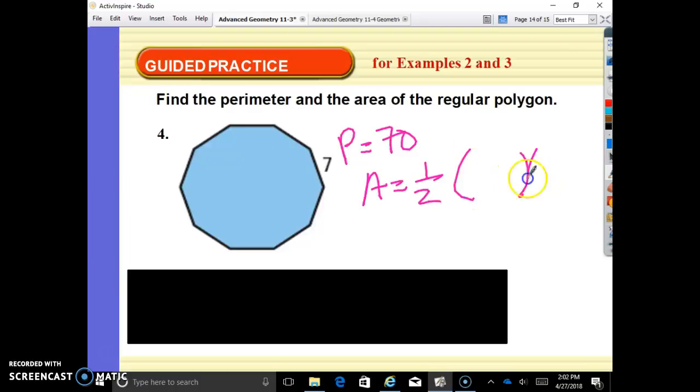So let's check out what our apothem would be. If we have 10 equal sides and 360 divided by 10 is 36, when we split this down 36 divided by 2 is going to give me 18 degrees. So we know that the base is 7, so half of the base is 3.5.